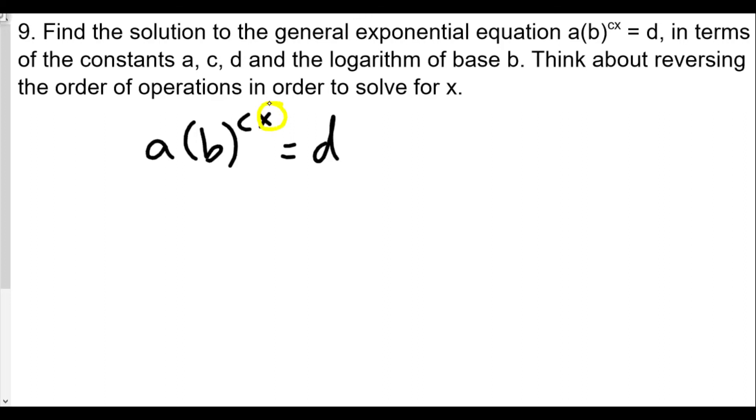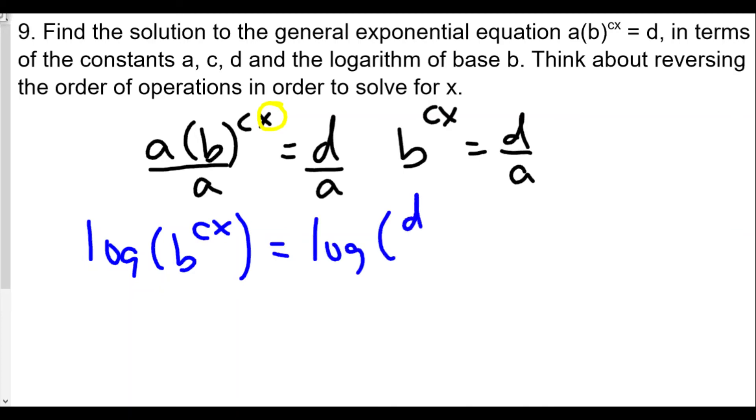So we have a times base b raised to cx equals d. And we're looking for x. X is going to be in the exponent. Our variable is the exponent. We're definitely using logs. We want to isolate the base by itself, so we'll divide both sides by a. So now we get b raised to cx equals d over a.